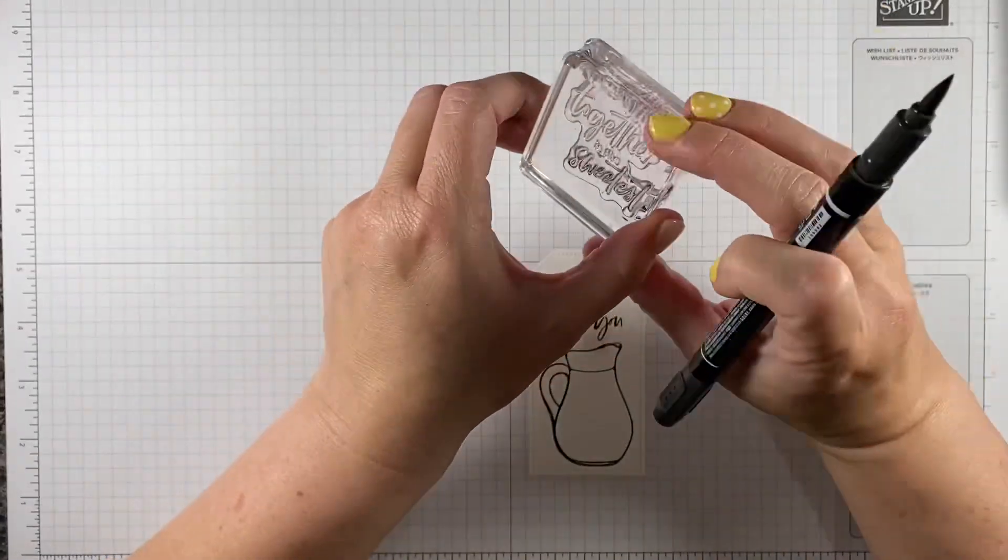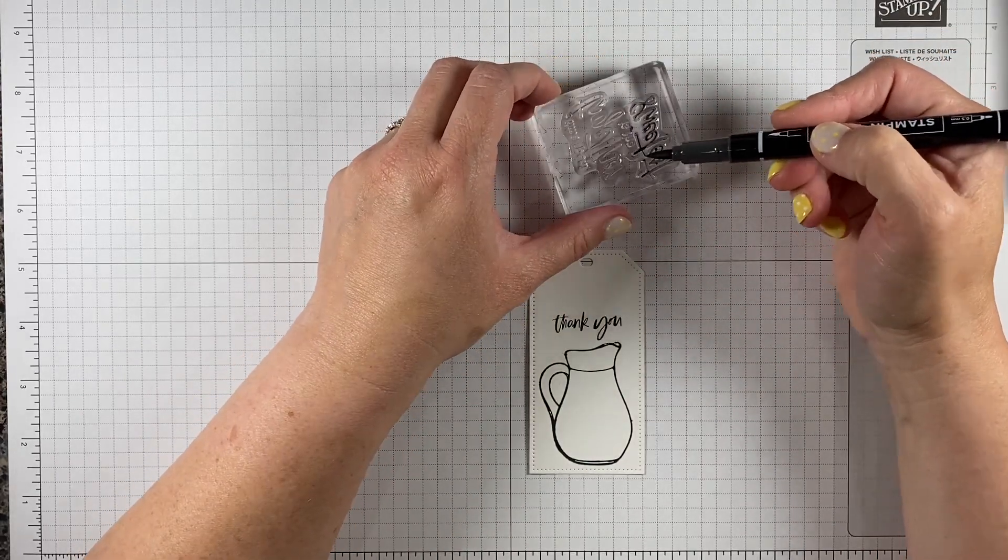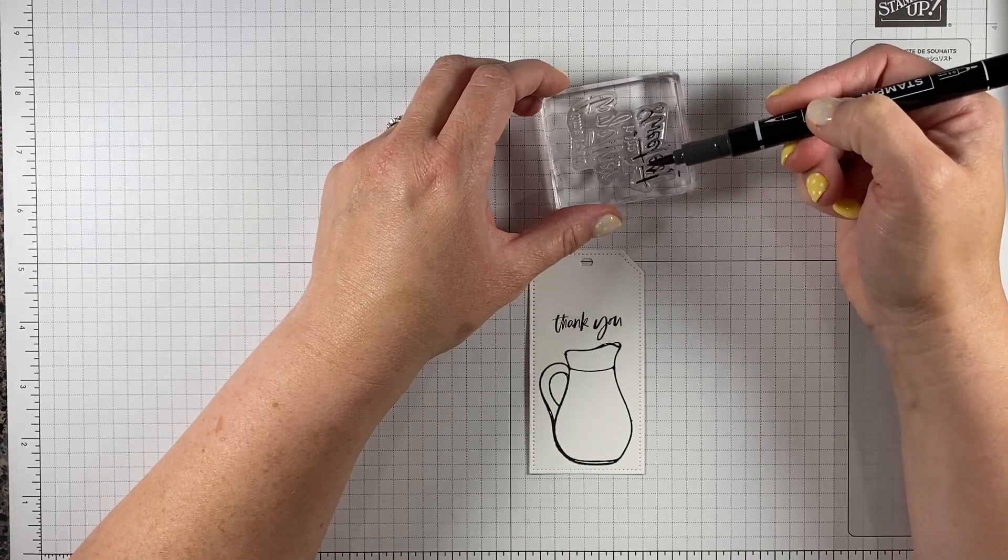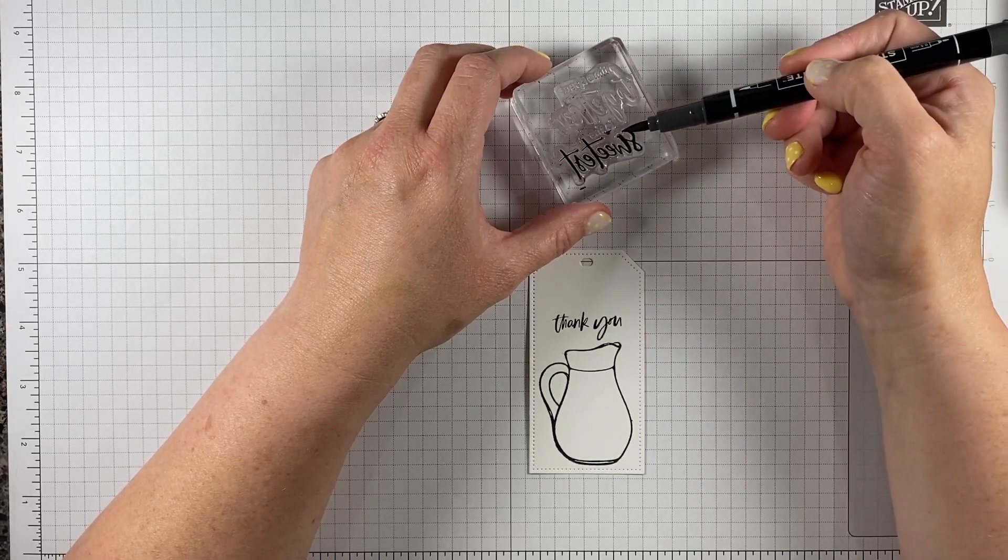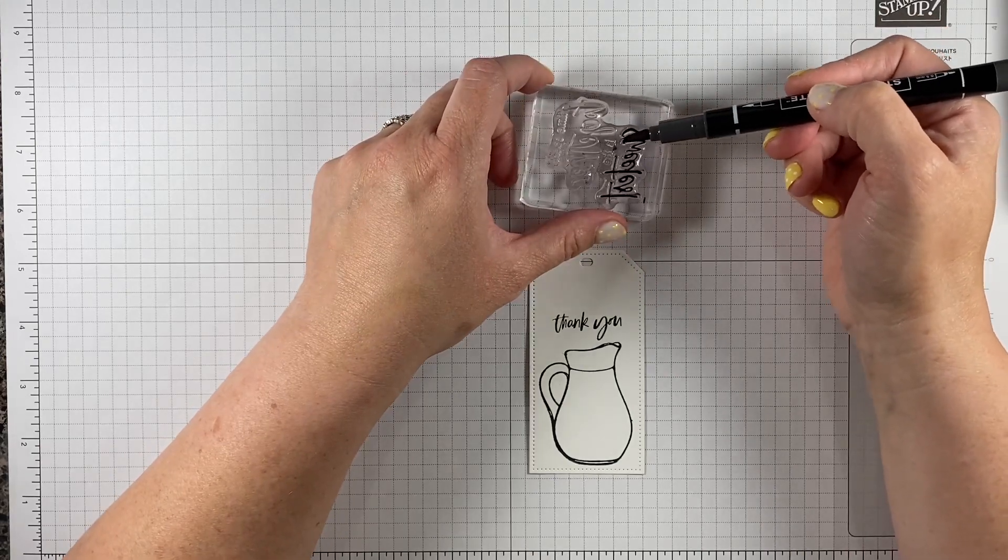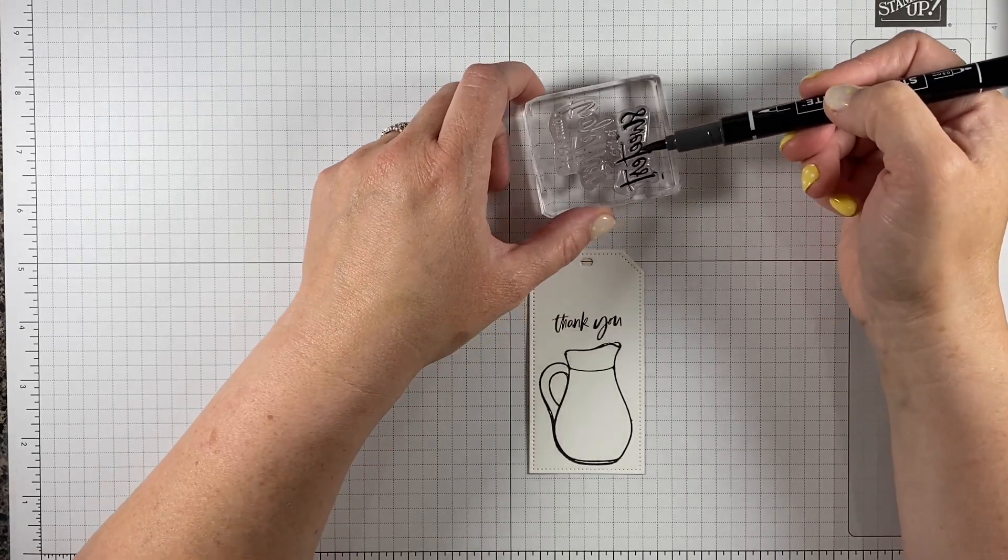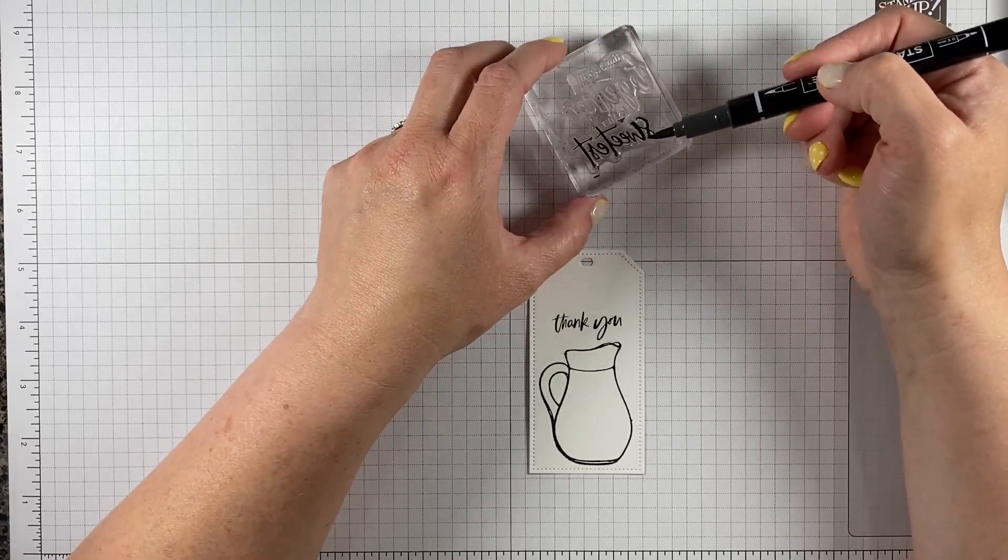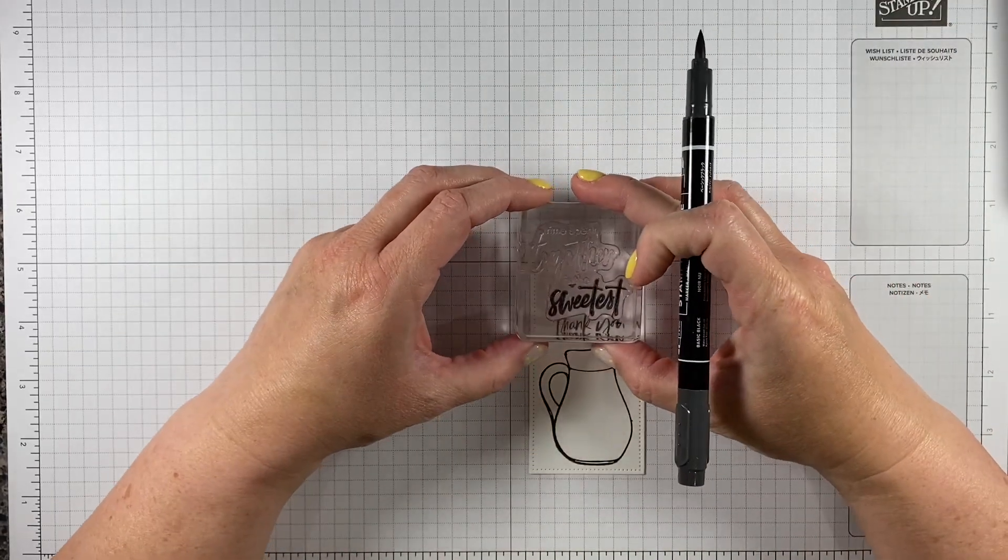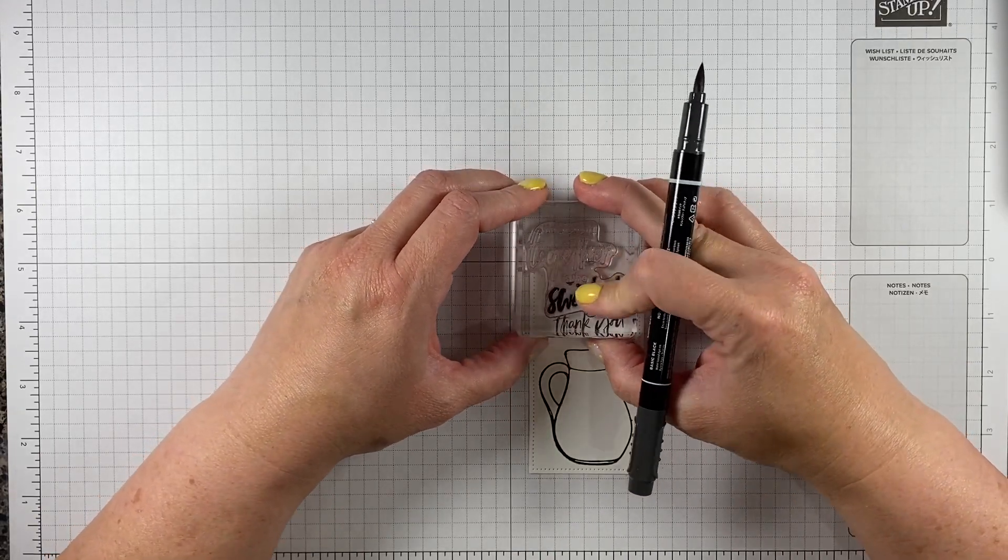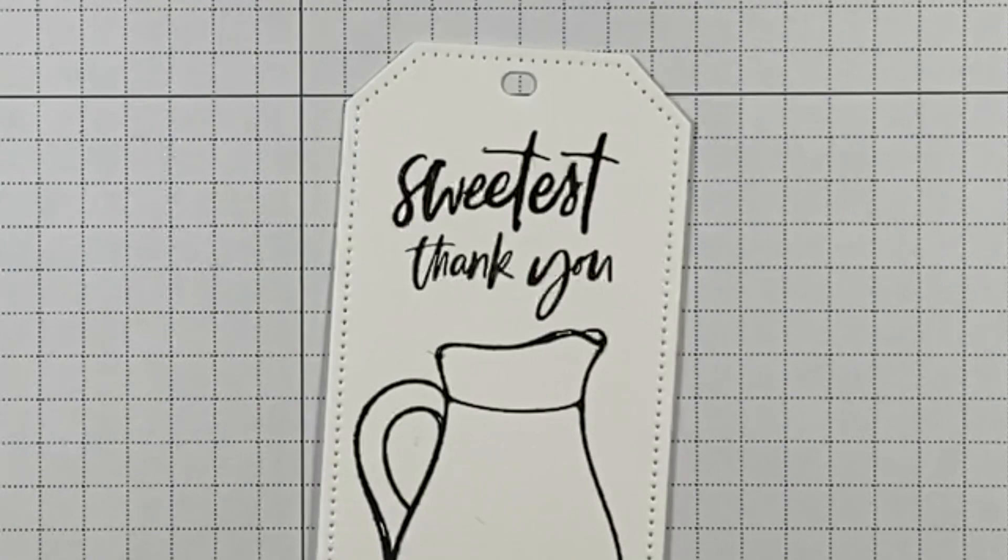There's also a greeting here that says time spent together is the sweetest, but I just want sweetest. So I'm going to again ink up just the word I want. This is called omitting. You can also do two-tone, like I could come in with another color and do some of the other words. Right now I'm just choosing part of an image, so I'm omitting the rest. This is water-soluble ink so it'll wash right off my stamp. So now I've got sweetest thank you.